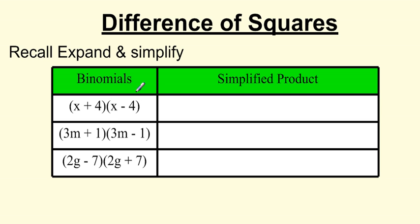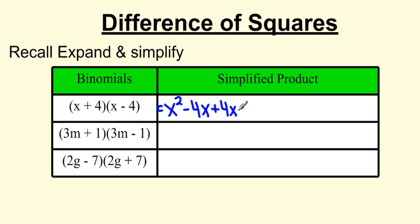The FOIL rule states: First, Outside, Inside, Last. So my first two terms — x times x — gives me x squared. The O in FOIL stands for outside, so x times negative 4 is negative 4x. The I in FOIL stands for inside, so I have 4 times x. And the L in FOIL stands for last, so I have 4 times negative 4. I'm going to simplify these by collecting the like terms, and I end up with x squared. Negative 4x plus 4x cancel out, leaving negative 16.